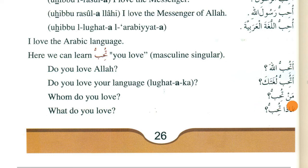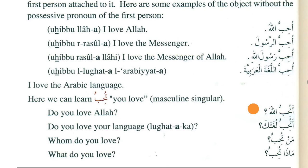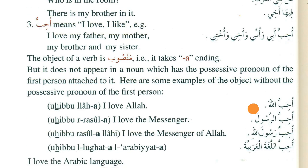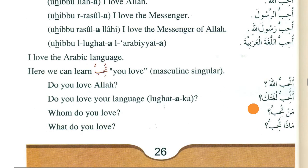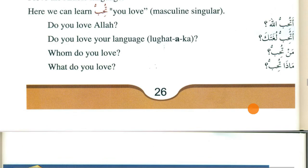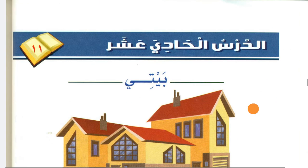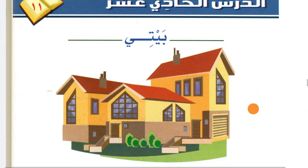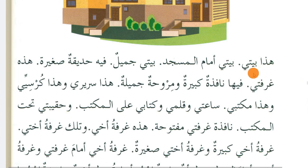Similarly with 'tuhibbu' (you love) the maf'ul bihi takes fatah. For questions like 'man tuhibbu?' or 'maza tuhibbu?' the maf'ul bihi appears in the answer. You just need to read through it and feel free to ask on WhatsApp or in the comments. Now, darsul hadi ashara - lesson 11 text: 'bayti' - my house. 'Haza bayti' - this is my house. 'Bayti amama al-masjid' - my house is in front of the mosque.